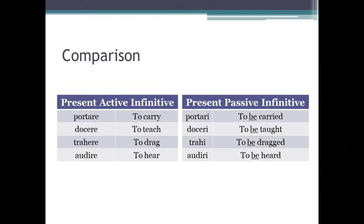So now I would like you to spot the differences and compare the ordinary present active infinitive forms with the present passive infinitives. You should notice that the normal present active forms end in -re and mean 'to' in English. However, the new present passive infinitive forms mean 'to be' in English, and instead of ending in -re, they end in -ri for first, second, and fourth conjugation verbs, and -i for the third conjugation.